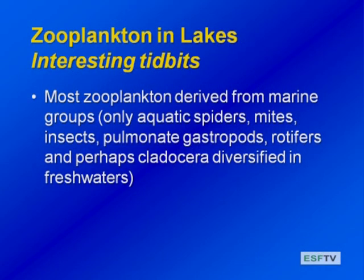A few interesting tidbits about zooplankton to start out. Most zooplankton in fresh waters are derived originally from marine groups, but there are a few that evolved in freshwater systems — aquatic spiders and mites, the aquatic insects we talked about in streams, as well as the pulmonary gastropods, and one of the three main groups of freshwater zooplankton, the rotifers, really diversified in freshwater systems. Cladocera also diversified quite a bit in fresh waters.